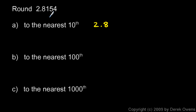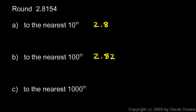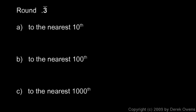Round 2.8154 to the nearest hundredth. We look at the next digit — it's 5 or higher — so we round this one up and it becomes 2.82. And to the nearest thousandth, the thousandth is the third place, so we look at the next digit. It's not 5 or higher, so the 5 there doesn't get rounded up, and the answer is 2.815.